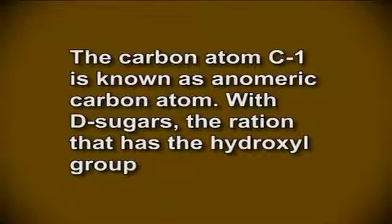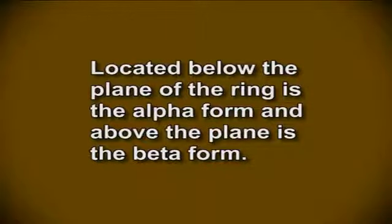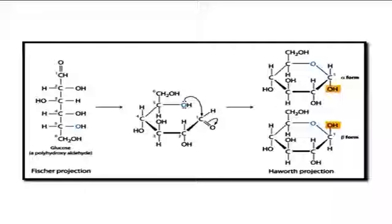The carbon atom C1 is known as the anomeric carbon atom. With D sugars, the configuration that has the hydroxyl group located below the plane of the ring is the alpha form, and above the plane is the beta form. For sugars in the L series, the opposite is true. An example of alpha and beta forms of D-glucopyranose is shown in Figure 3 on your screen. Important derivatives of monosaccharides occurring as components of polysaccharides include amino sugars, where one hydroxyl group is replaced by an amino group, such as glucosamine and galactosamine.